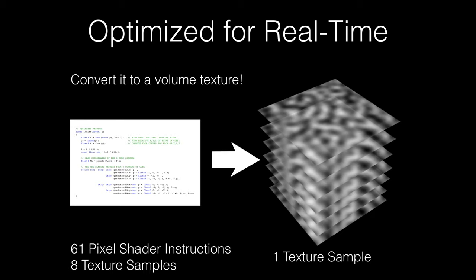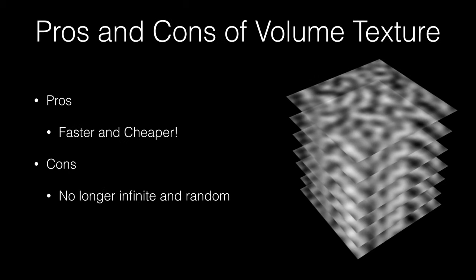One solution is to render out a series of slices of the noise in 3D space and create a volume texture. This bakes down the 61 instructions and 8 texture samples into just a single texture sample, which makes the technique way cheaper, but there are some drawbacks. In order for the volume texture to work, we have to make it tile in all three dimensions, which is a tricky thing to do. And since it's tiling, it's no longer an infinite and non-repeating pattern, which is one of the key strengths of the algorithm.